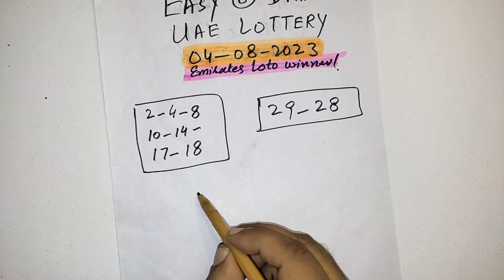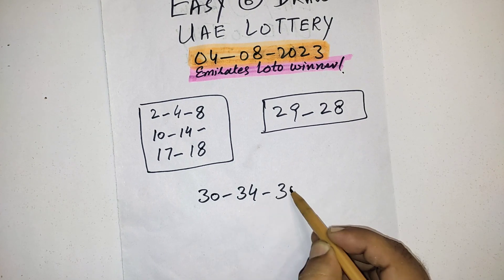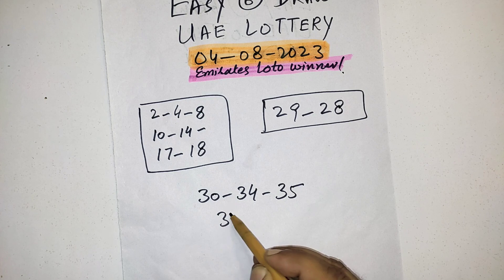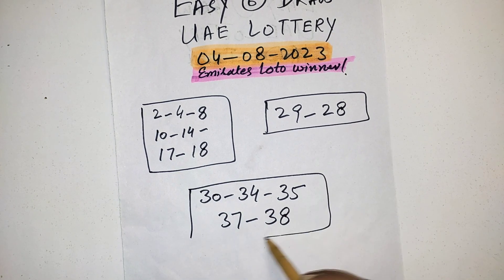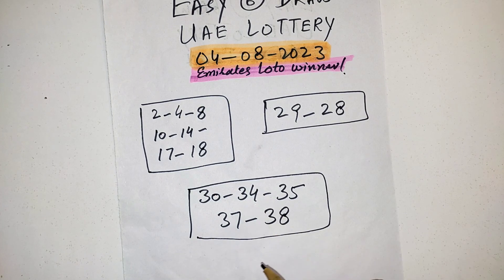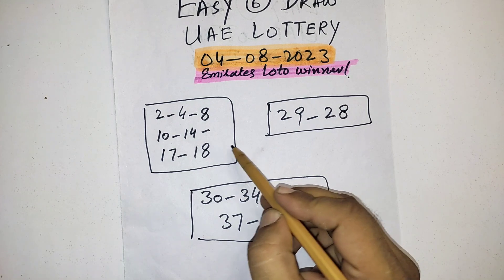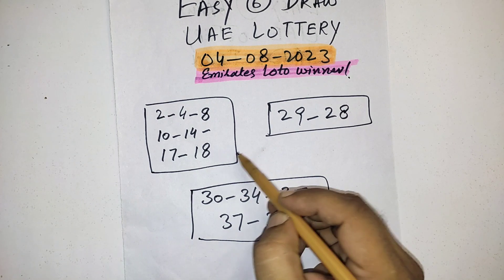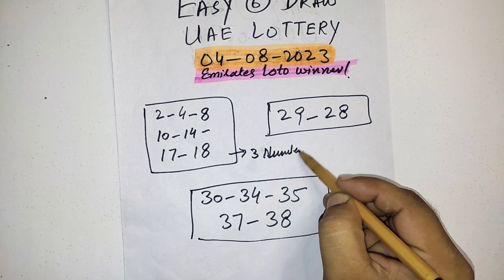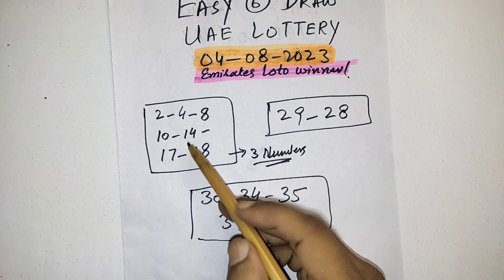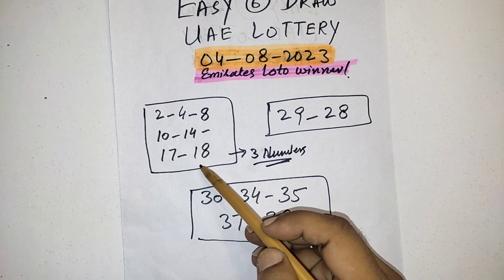And third one is 30, 34, 35, 37 and 38. Friends, these are the three parts. First of all, you should select three numbers from these numbers: 2, 4, 8, 10, 14, 17 and 18.